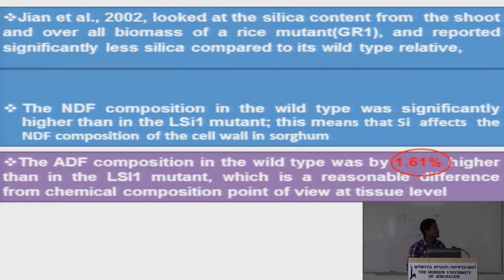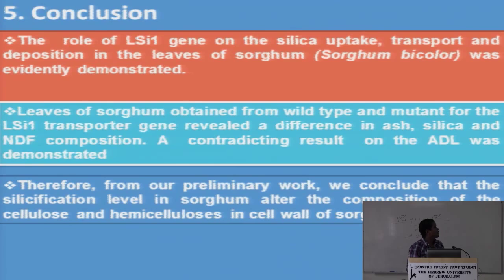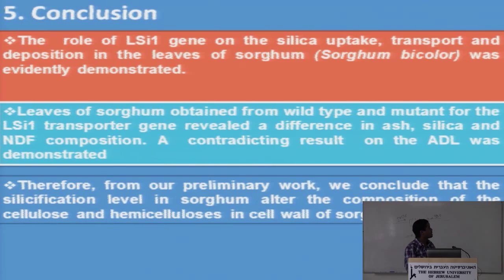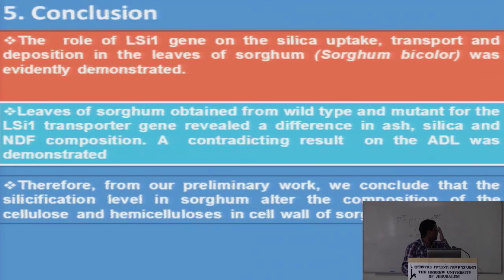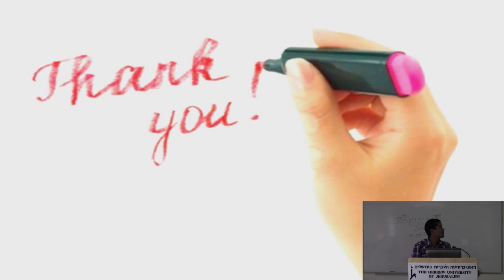Results: germanium selection revealed a 3:1 ratio of healthy to defective seedlings, suggesting a single recessive gene. PCR results showed wild type DNA bands close to 250 bp and mutants close to 750 bp, confirming the silicon uptake gene is impaired. Mineral content and silica composition were both significantly higher in wild type than mutant. Neutral detergent fiber and acid detergent fiber were also significantly higher in wild type, while no significant difference was found for acid detergent lignin.